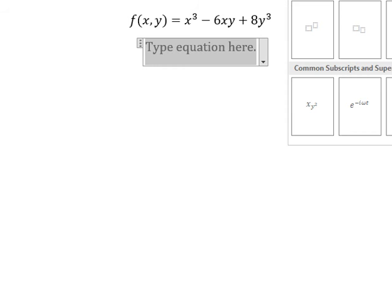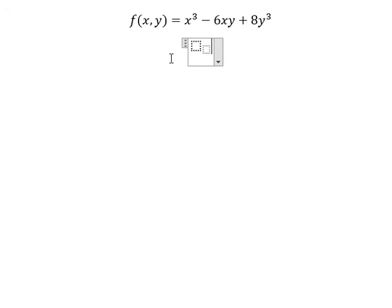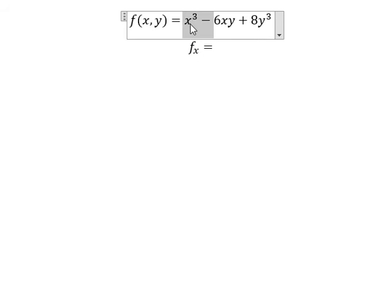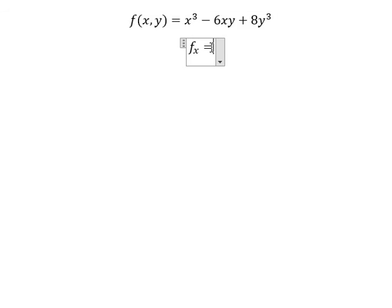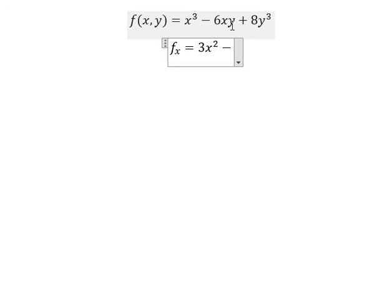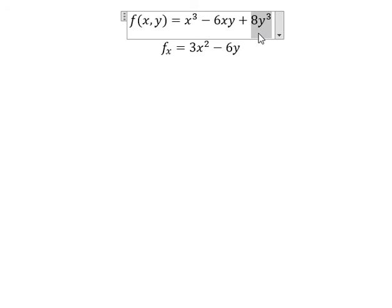We need to find the first derivative of the function with respect to x. We just have x to the power of 3. The first derivative of x to the power of 3 gives us 3x squared. The first derivative of x gives us 1, so we have 6y. This term has no x, so you get 0.